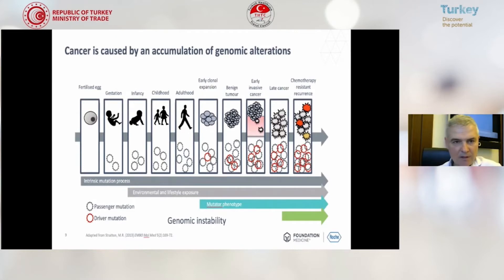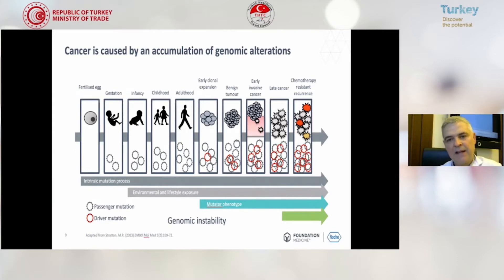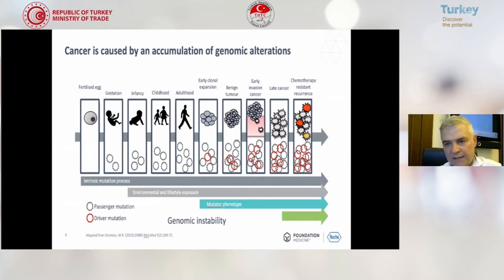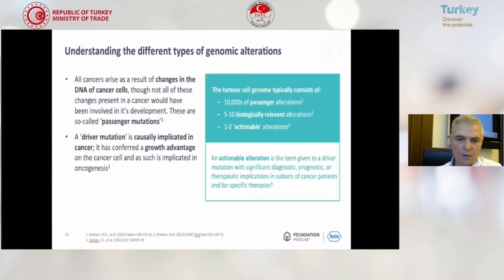Cancer is a dynamic phenomenon. It is caused by accumulation of genomic alterations. It starts with a fertilized egg, continues with gestation and infancy, and then ultimately a lot of mutations accumulate. The red circles are somatic mutations. They accumulate, and cancer can occur. This is called genomic instability.